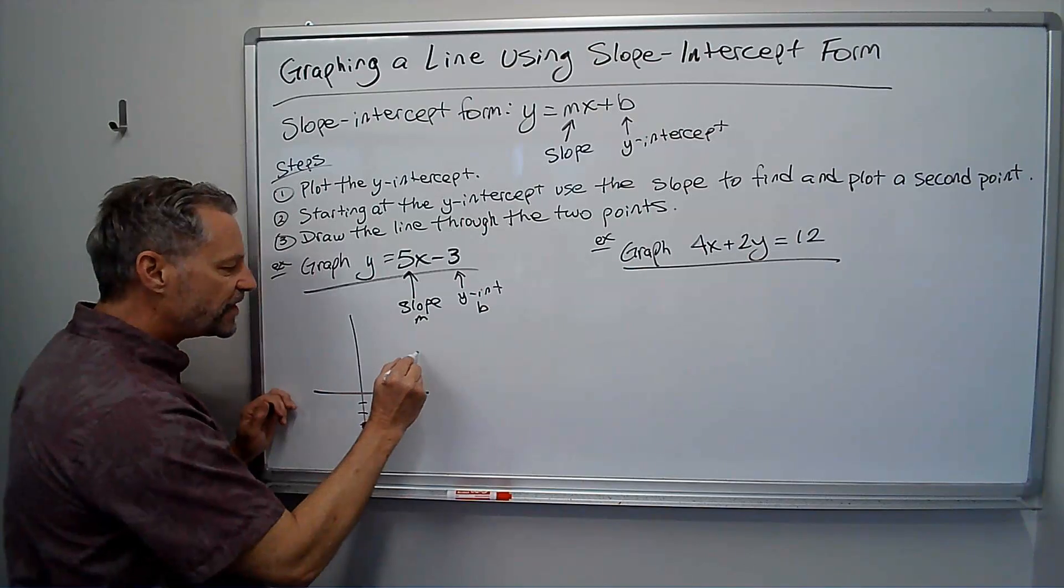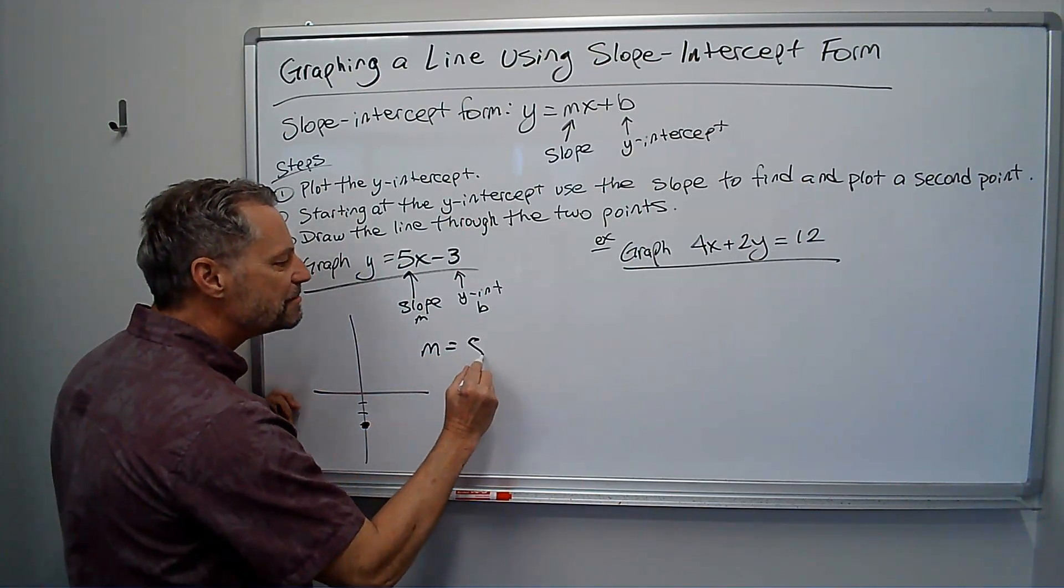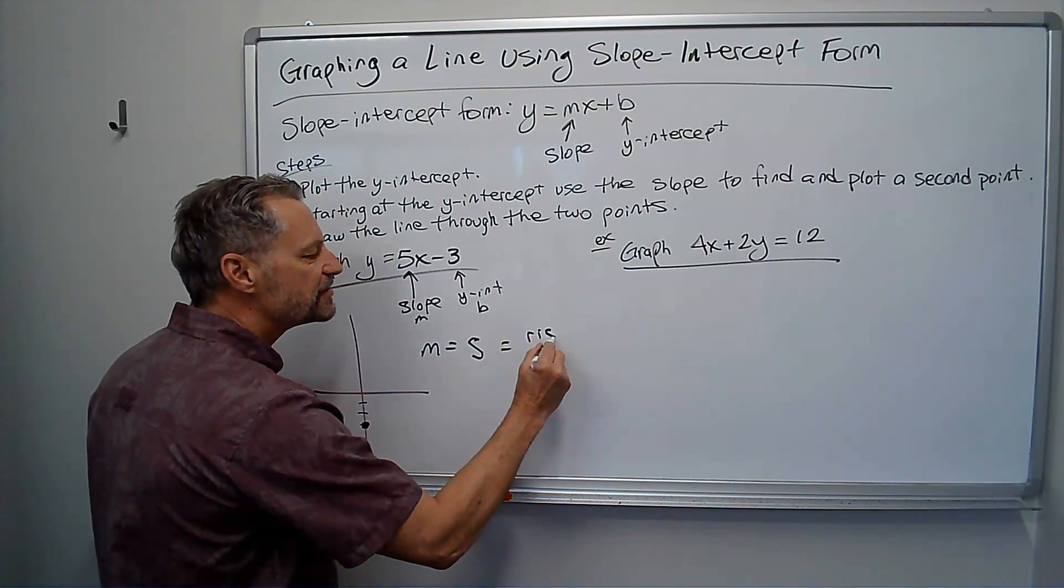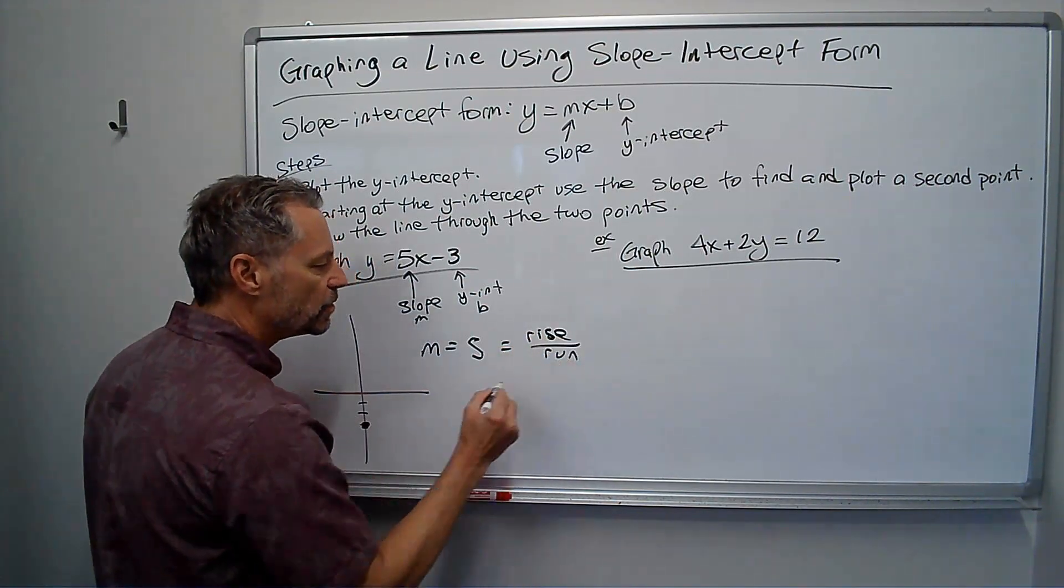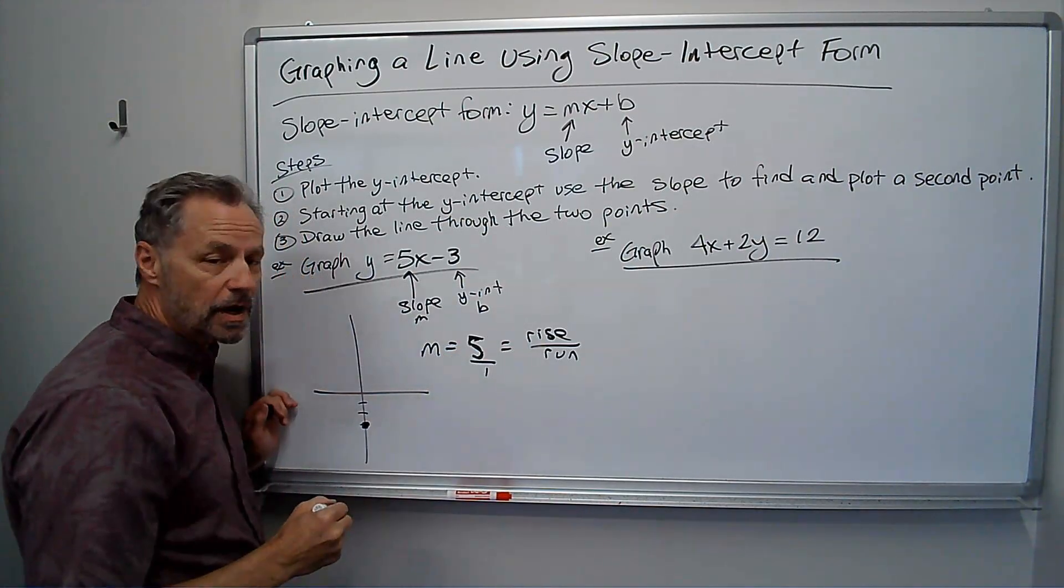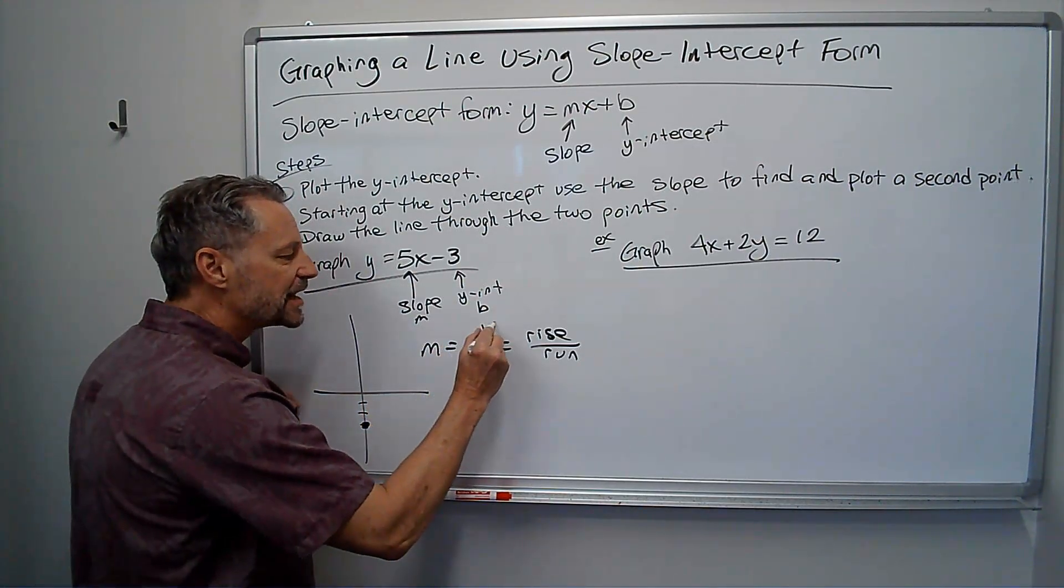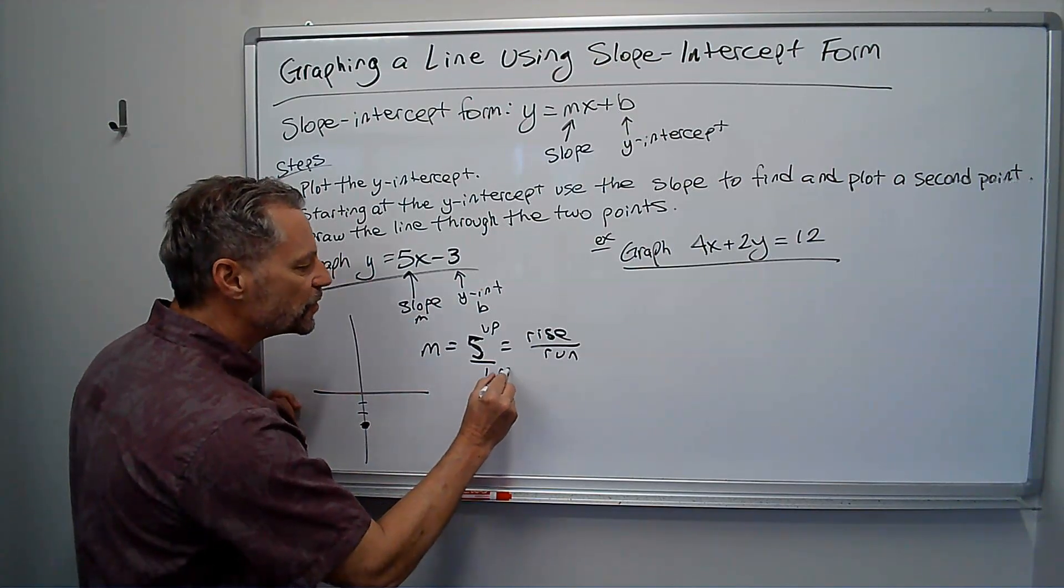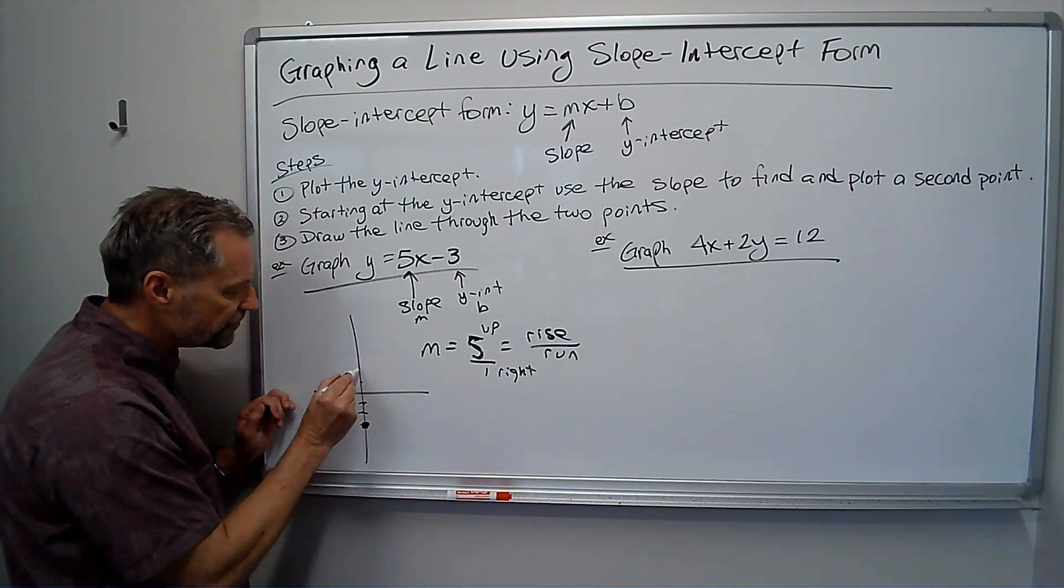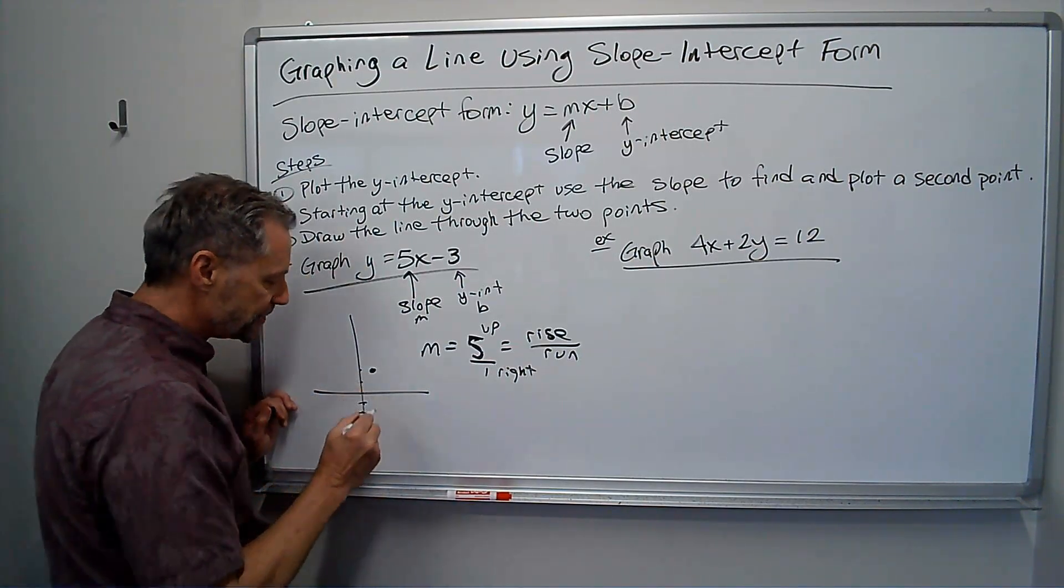The slope is 5, and remember, the slope we usually think of as the rise over the run. As a fraction, 5 is 5 over 1. So the rise is 5, meaning I go up 5. The run is 1, so I go right 1 from the y-intercept. So I go up 1, 2, 3, 4, 5, or I go right 1, draw a dot there.